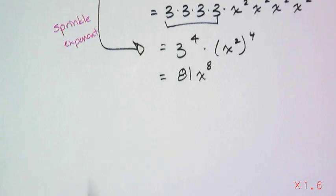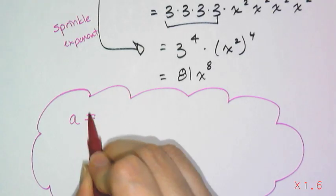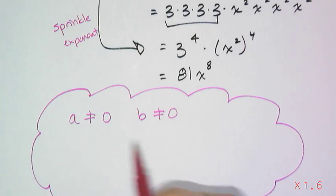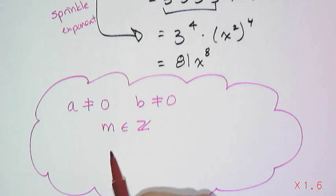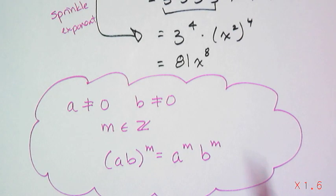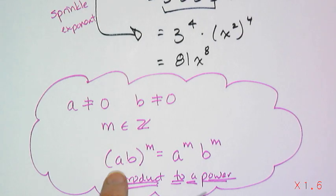Like all the other properties, it has a formal way in which it is written. If a cannot equal 0 and b cannot equal 0, and m is an integer exponent, then a times b raised to the mth power is the same thing as a to the mth times b to the m. This is called product to a power — everything inside the parentheses gets raised to that power, and it could be more than two things. Note it's product and not sum: if you change the operation between a and b to a plus or minus, this does not work. It only works for multiplication.